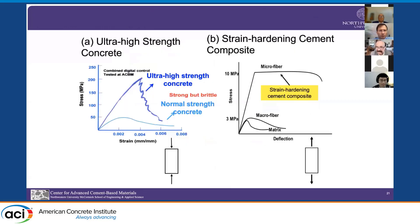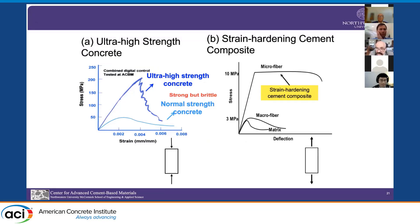To conclude: so far we have had two separate developments — ultra-high strength concrete, which rarely mentions tensile strain, and strain hardening composites focused on multiple cracking. To achieve UHPC structures with high deformation capability and low crack widths, we must have UHPC with strain hardening, using either steel fiber or synthetic fibers. Thank you.